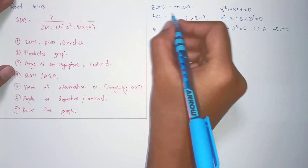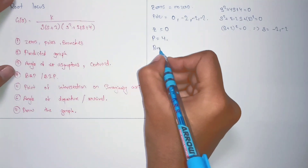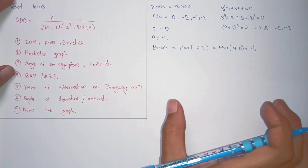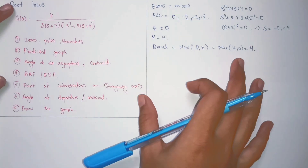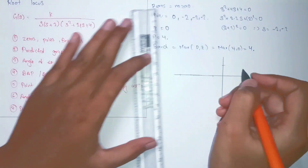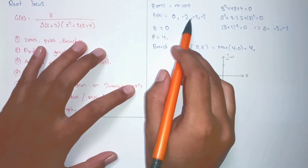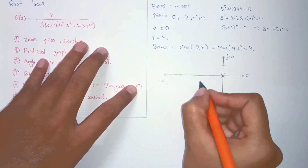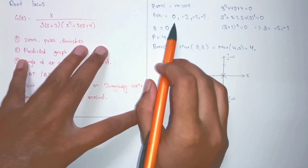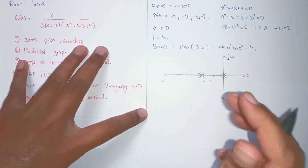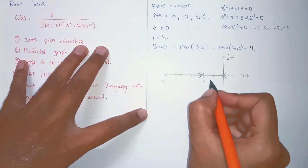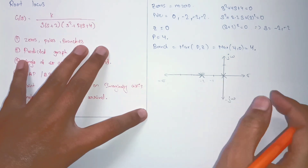We got zero equal to zero and poles equal to four. For branches we have to take the maximum of poles and zeros, so maximum of four and zero is four — we will have four branches in the overall diagram. Now we will draw the predicted graph. The poles are at zero, minus two, minus two, and minus two. For zeros, since there is no zero in this system, to draw a zero you put a circle at that point; for a pole you put a cross mark.